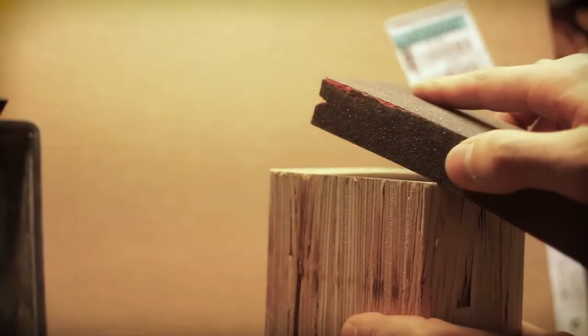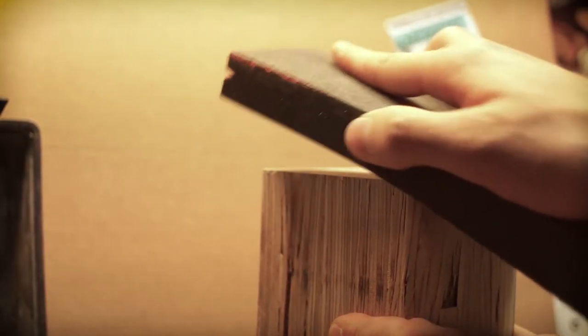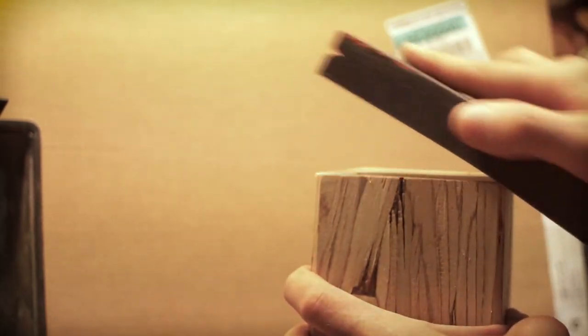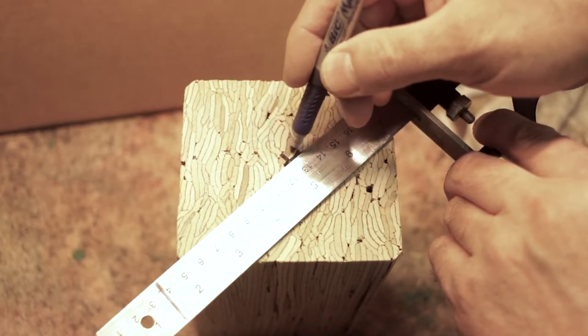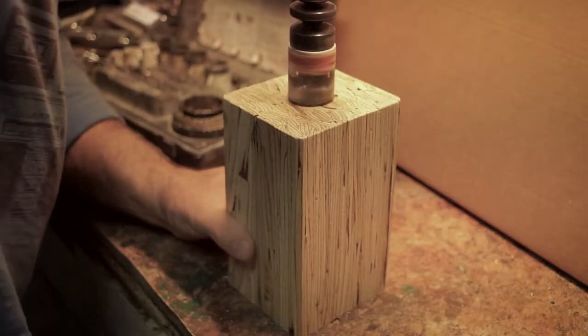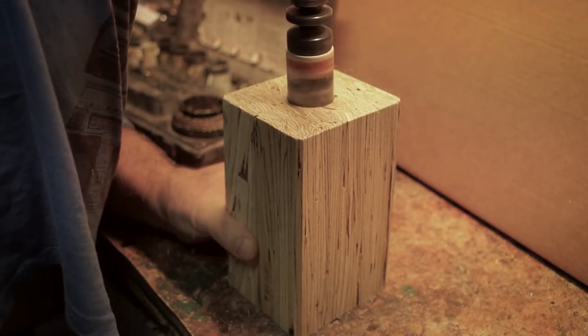Once you're happy with the dimensions, make sure you smooth out the edges with some sanding paper. Then mark down where you want the light socket to go and start drilling a hole of the same diameter as the light socket itself.